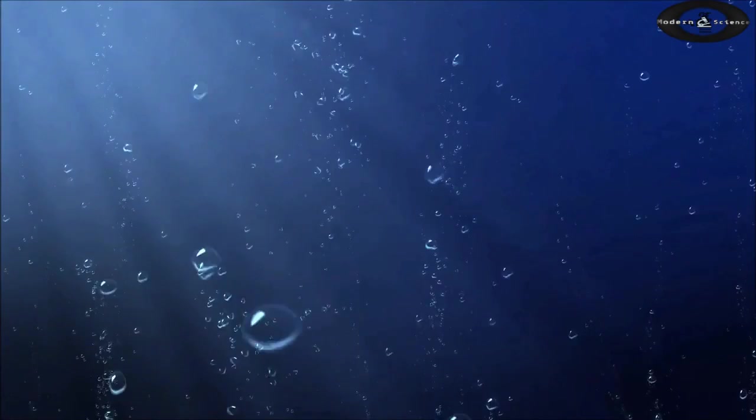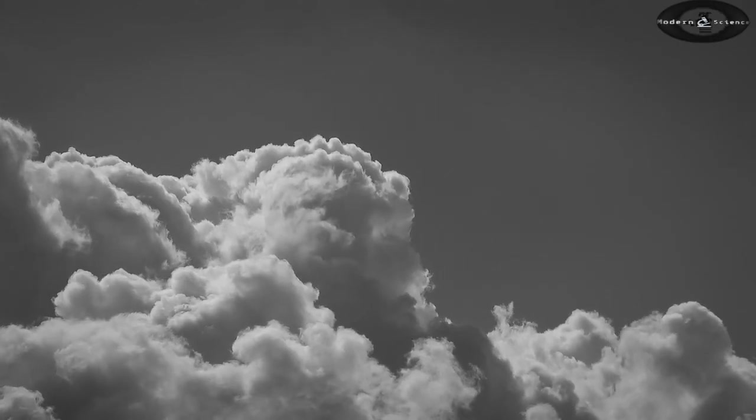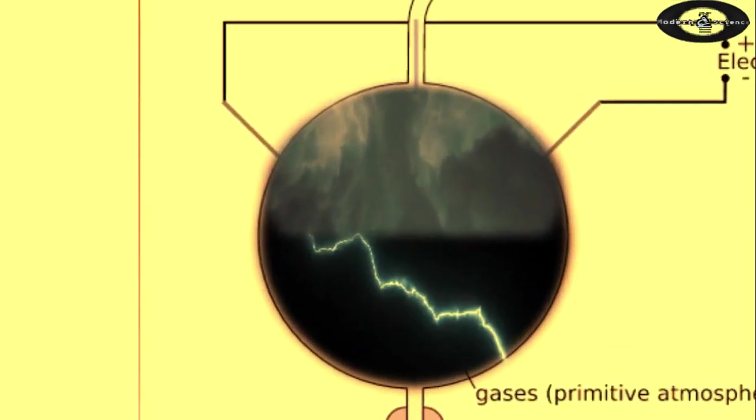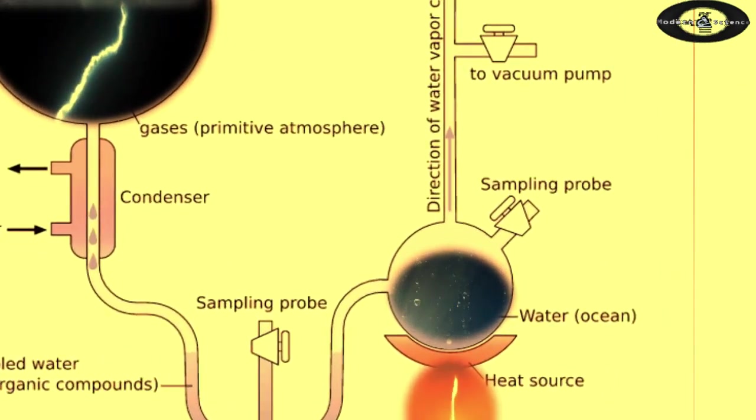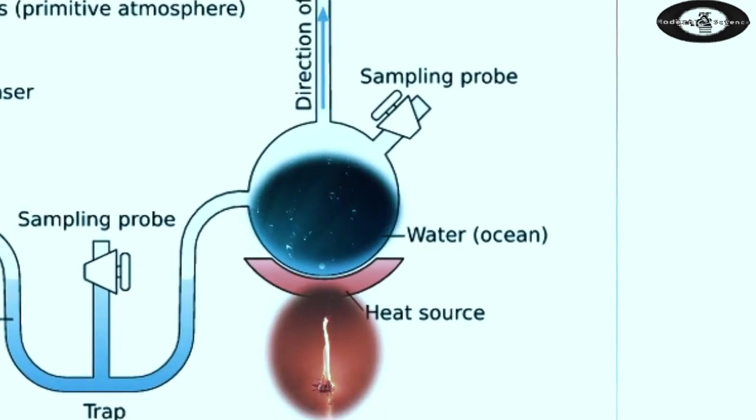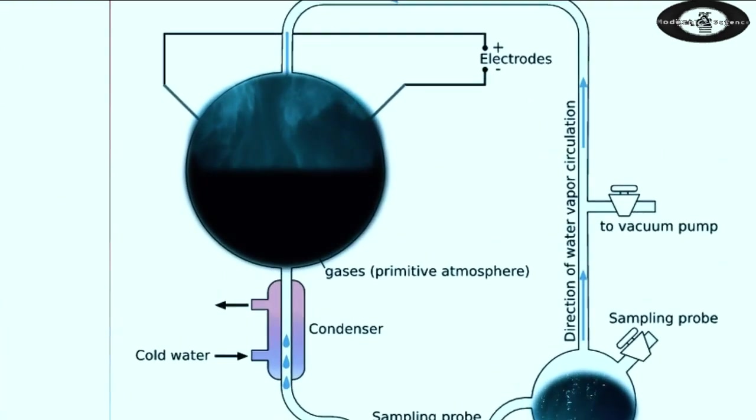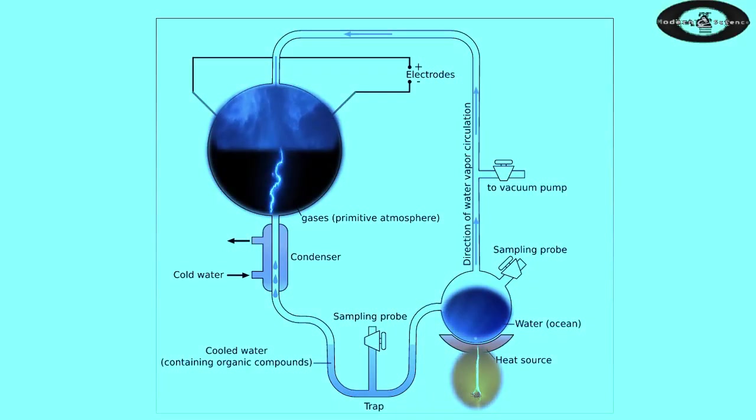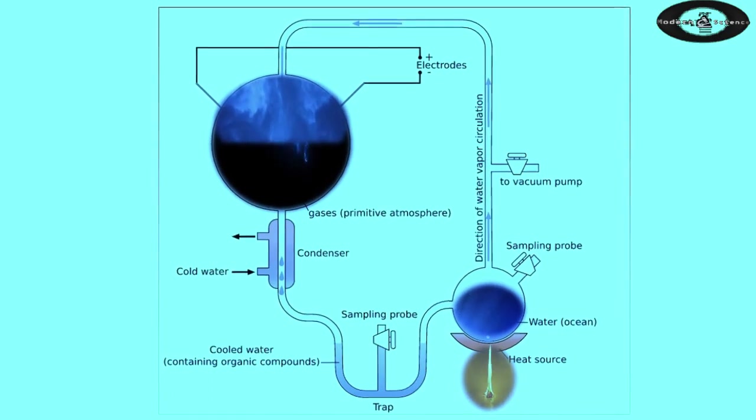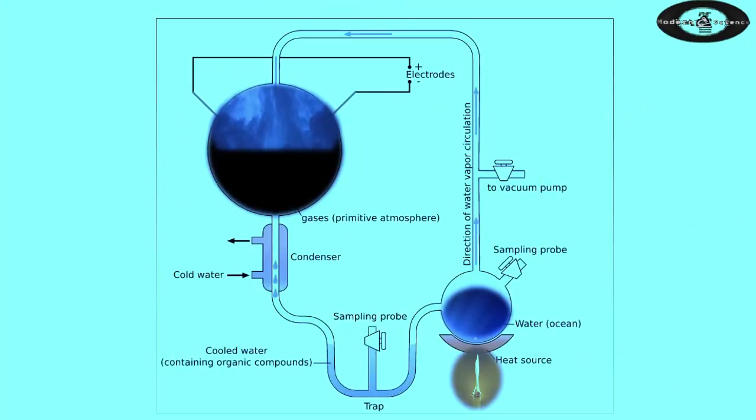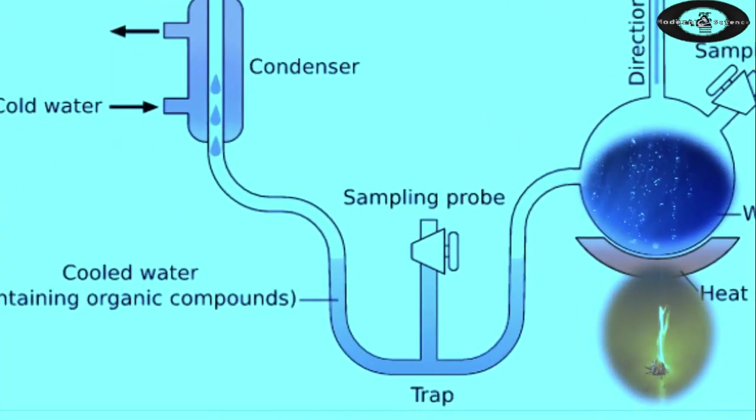What was the experiment? The experiment used water, methane, ammonia, and hydrogen. The chemicals were all sealed inside a sterile 5-liter glass flask connected to a 500-milliliter flask half-full of water. The water in the smaller flask was heated to induce evaporation and the water vapor was allowed to enter the larger flask. Continuous electrical sparks were fired between the electrodes to simulate lightning in the water vapor and gaseous mixture. And then the simulated atmosphere was cooled again so that the water condensed and trickled into a U-shaped trap at the bottom of the apparatus.